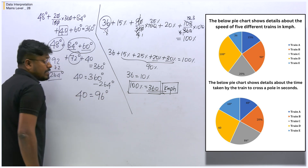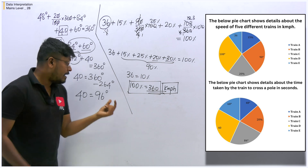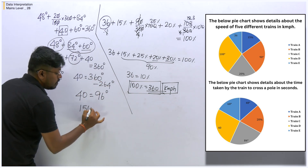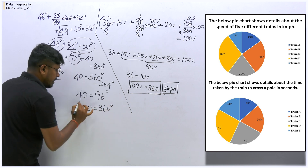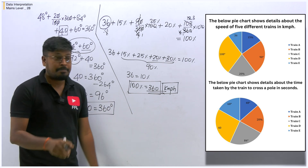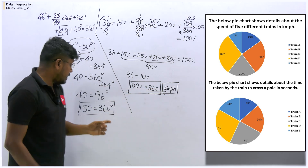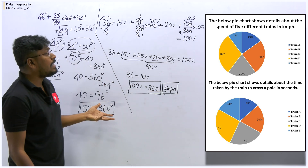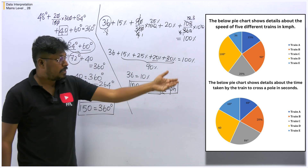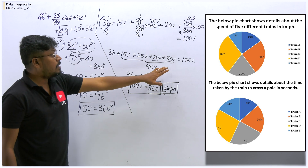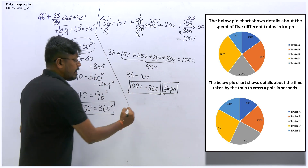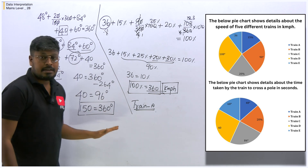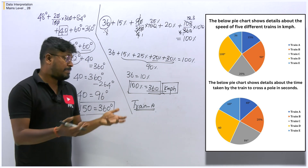Now it is easy to solve the five questions under the chart. We have found all pie chart values. For Train A: speed is 15% of 360 km/hr. Converting km/hr to m/s by multiplying by 5/18 gives 15 meters per second. The time taken by Train A is 48 degrees out of 360 degrees of 150 seconds, which equals 20 seconds.